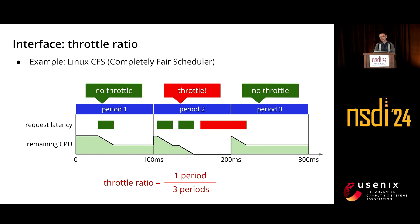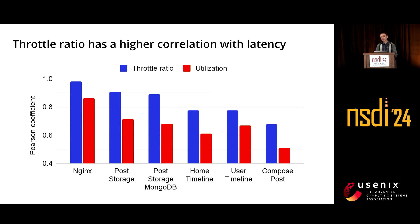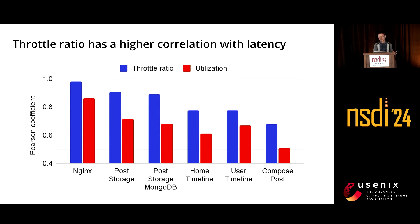Throttle ratio is a readily available metric in today's CPU schedulers such as Linux CFS. We also choose throttle ratio because our experiments show it has a higher correlation with end-to-end latency than CPU utilization. In this graph, the horizontal axis shows six different services in the Social Network application. We adjusted CPU allocation for these services and measured their throttle ratio, CPU utilization, and end-to-end latency. The vertical axis is the Pearson correlation coefficient with end-to-end latency. In all experiments, throttle ratio has a higher correlation with end-to-end latency than CPU utilization, giving us a better indication of service performance.